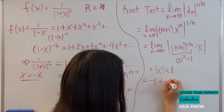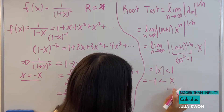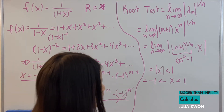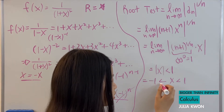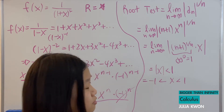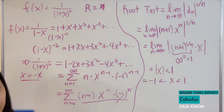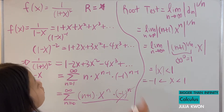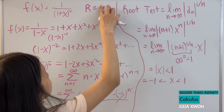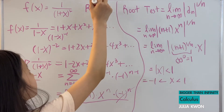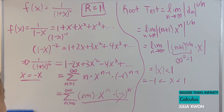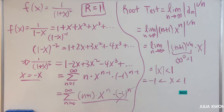We don't know yet if it's also convergent at x equals negative 1 and 1, but we don't even have to test that out because we're only finding the radius of convergence, not the interval of convergence. So we now know that the radius of convergence is 1, and we have found everything we need to find.